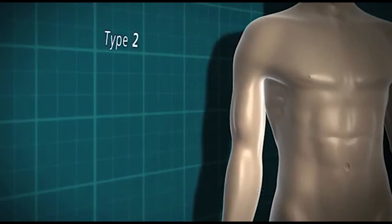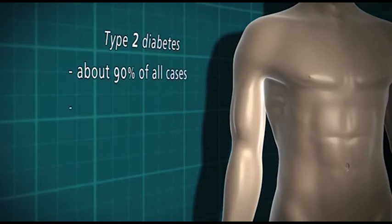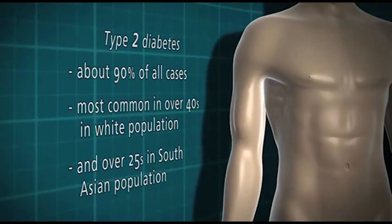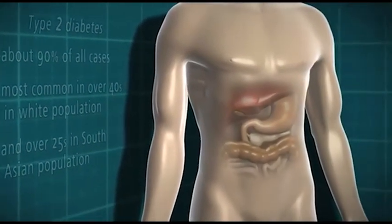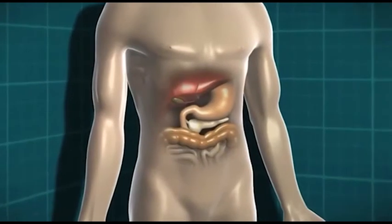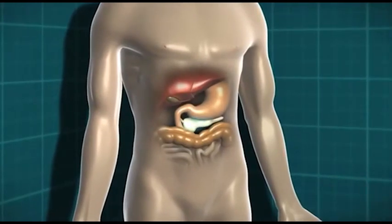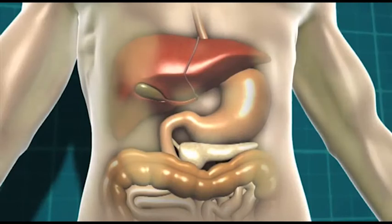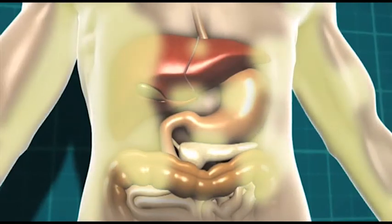Type 2 diabetes accounts for about 90% of all cases in the population. It's most common in the over-40 age group in the white population and in the over-25 age group in the South Asian population. Type 2 diabetes is a little more complex because of slightly more processes at work — either the body isn't producing quite enough insulin, or the insulin it is producing isn't working properly. That can be due to being overweight, because a build-up of fat can stop insulin doing its job properly, but it can also happen in people of a healthy weight.